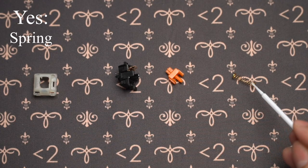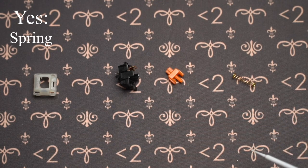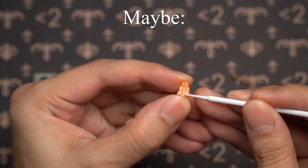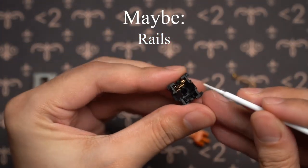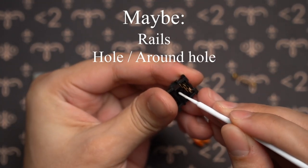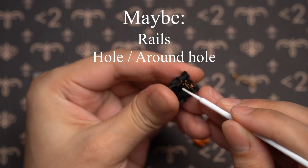Now there are three categories of parts when it comes to lubing a tactile switch. You've got category one which is things you should lube, and that is the spring. Category two is things you can lube, that being the rails on the stem as well as the switch bottom, as well as the hole and the area around the stem hole.